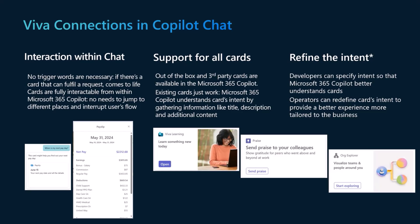When there is an interaction happening between the end user and Copilot, Copilot understands there is a specific card that was created or used by the company, and that card is able to provide the information the user was looking for. The card is able to surface in Copilot, and the user is able to interact directly with the card without leaving Copilot itself.